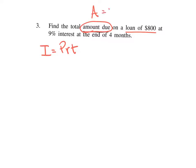A stands for our ending balance, or our amount due. We can see that A should equal how much money we borrowed — $800, which we call P. So A equals P plus your interest I. You're going to owe P plus I.